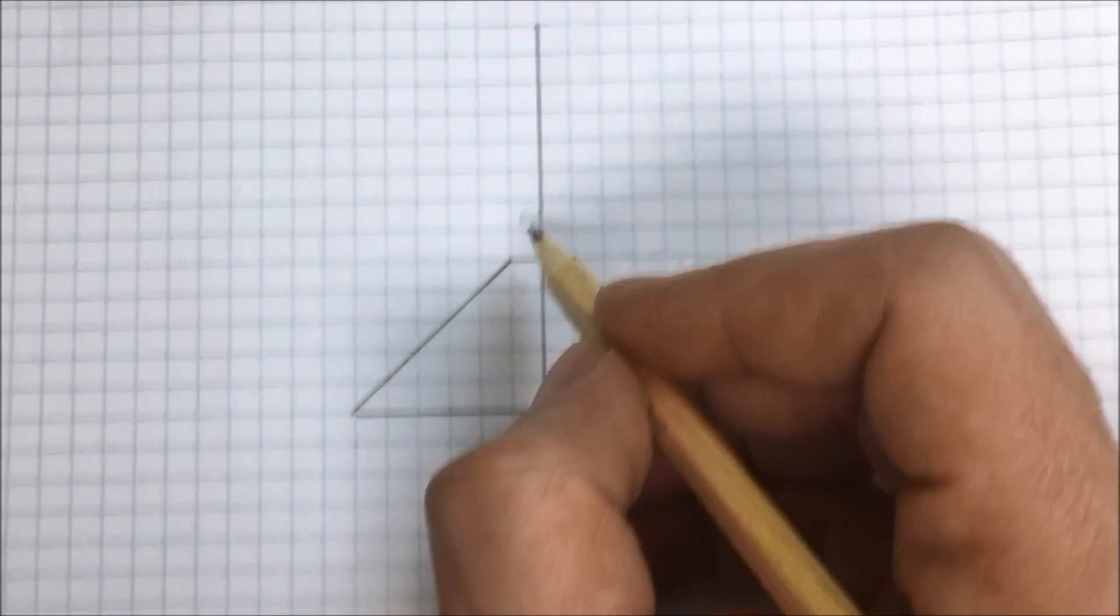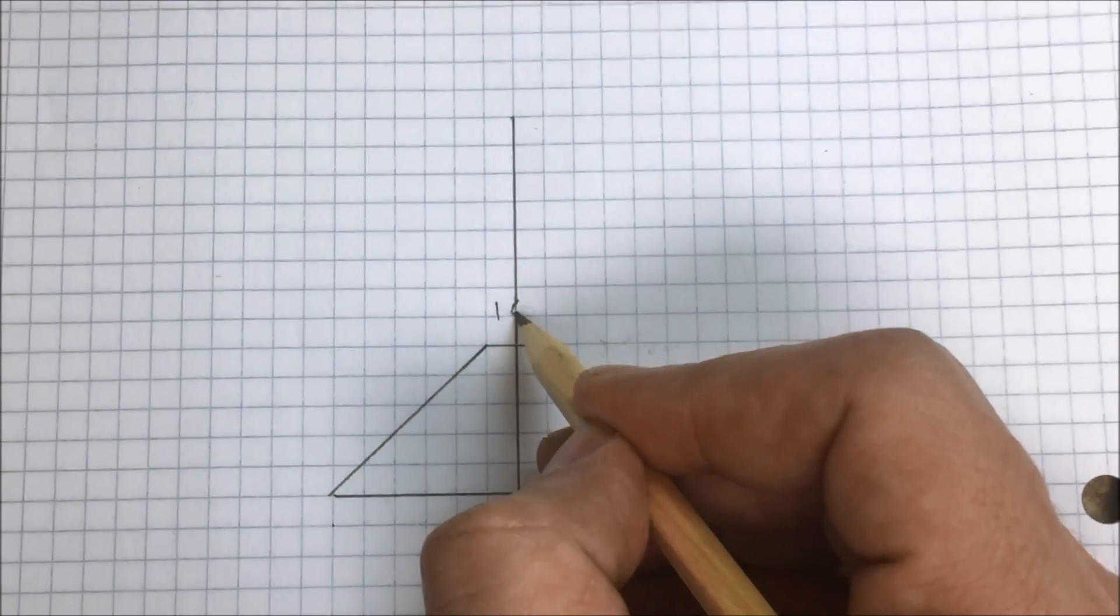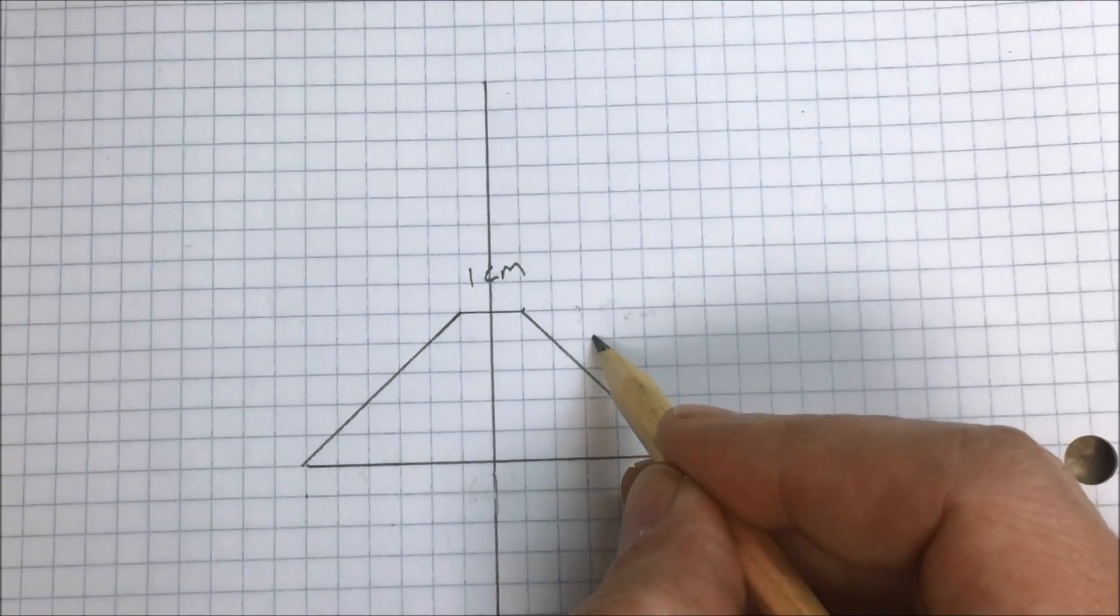What you're going to need to do is make a very basic shape. Now you can use a ruler, you can use the side of your CD case or your graph paper.